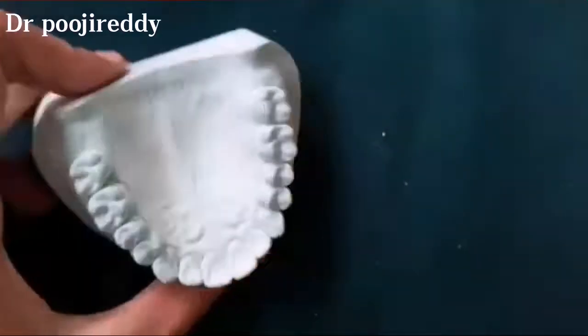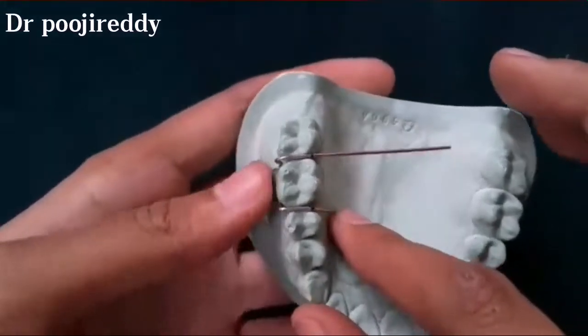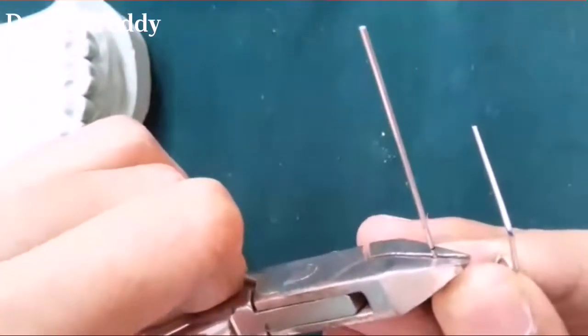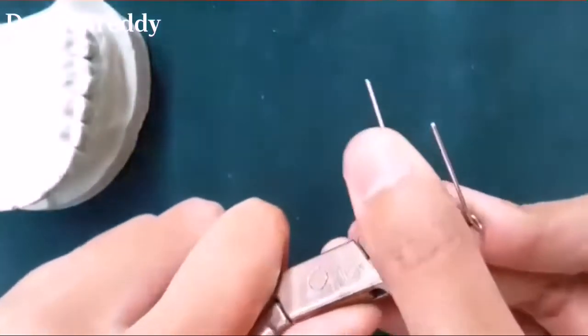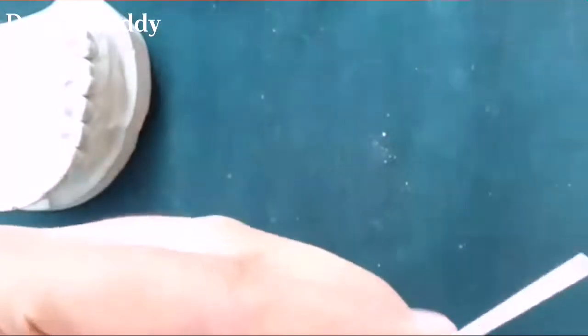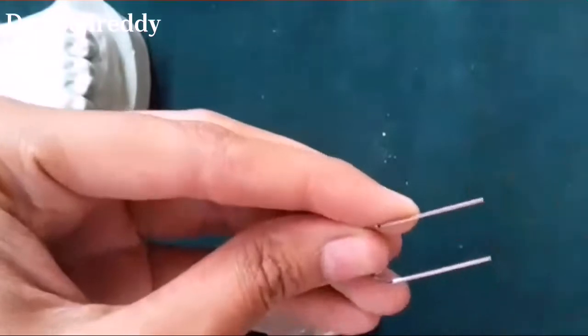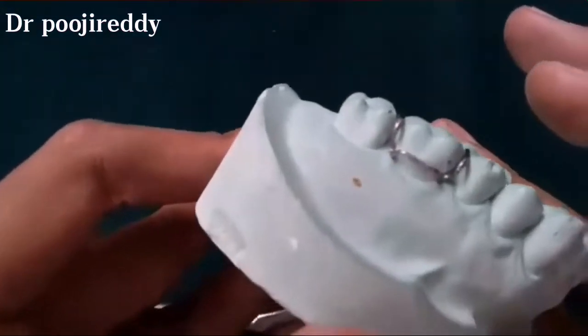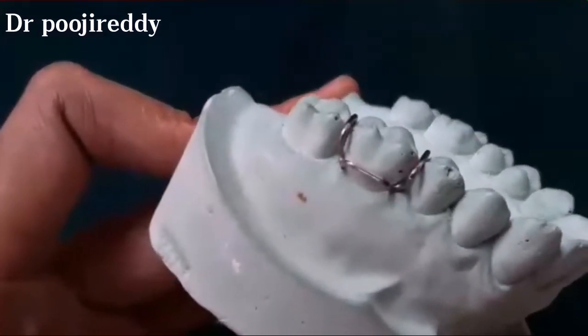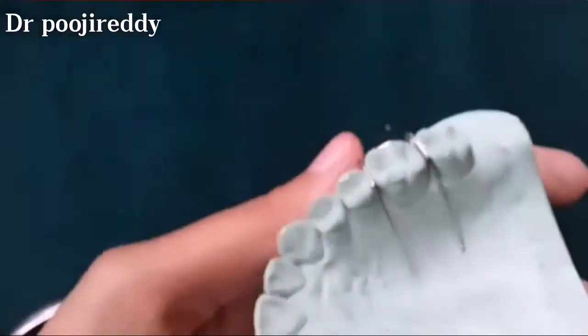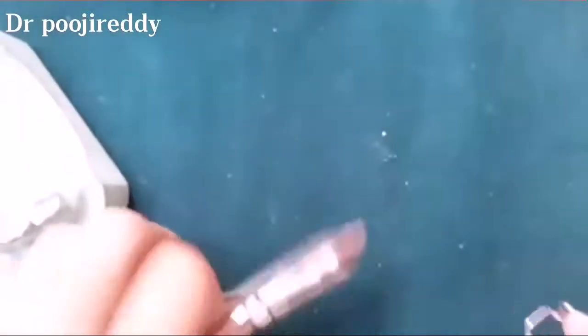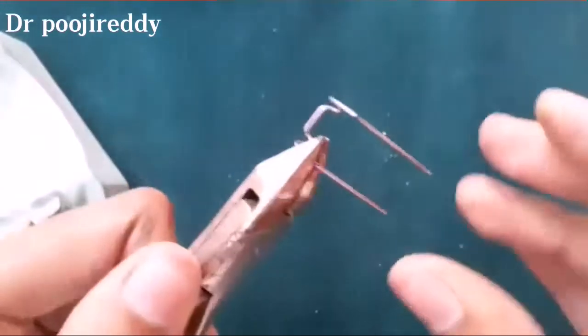And in the same way start bending on the other side. Now I am bending the distal side of the tag arm. Cut the extra wire, adjust it to the cast, and make some final adjustments.